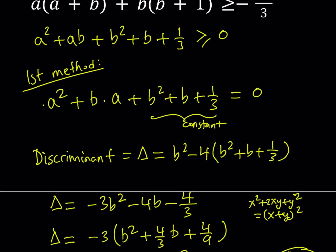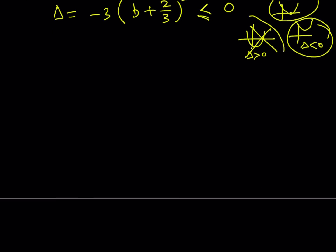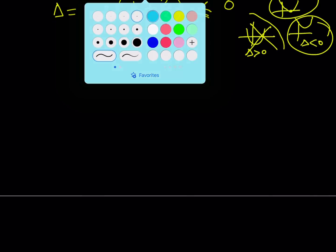Okay, so that concludes the first method, so this is true because we got a quadratic whose discriminant is less than or equal to zero, therefore, it either has one root or no roots. Great, let's go ahead and take a look at the second method.